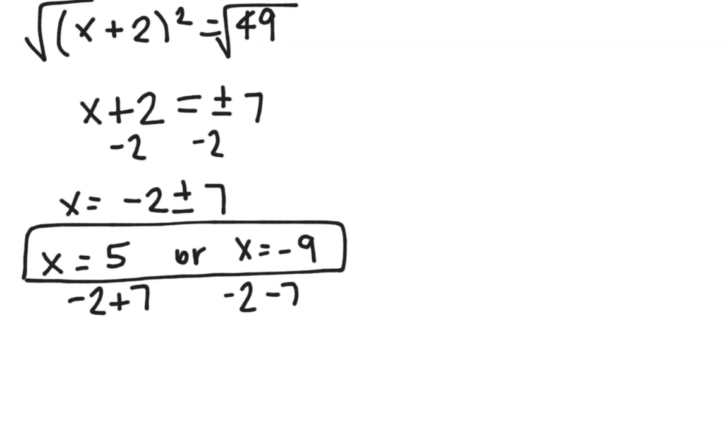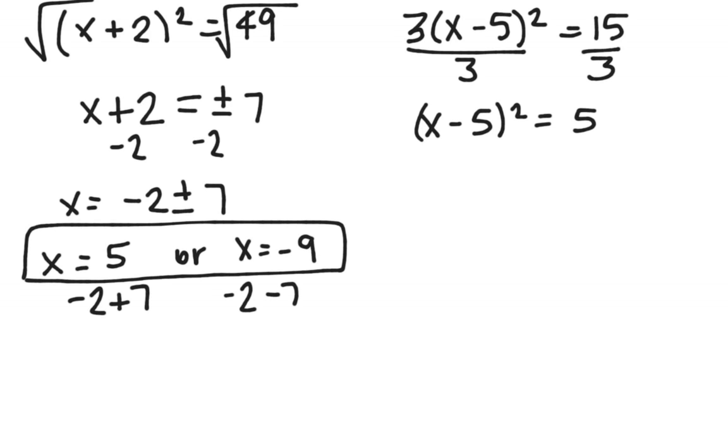The final example we're going to do does not have that quantity squared by itself, but it does have a quantity squared. So since 3 is times that quantity squared, we're going to divide each side by 3. That gives me x minus 5 quantity squared is equal to 5.